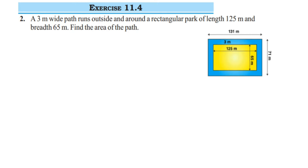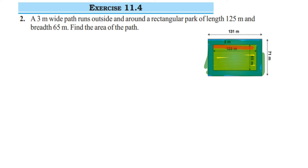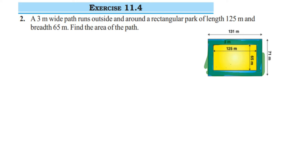How to solve this? What we're going to do is first find the area of the entire rectangular park including the path — that is, the whole area of the park and path combined. From this whole thing, we will subtract the area of the rectangular park, and then we will get the area of the path.